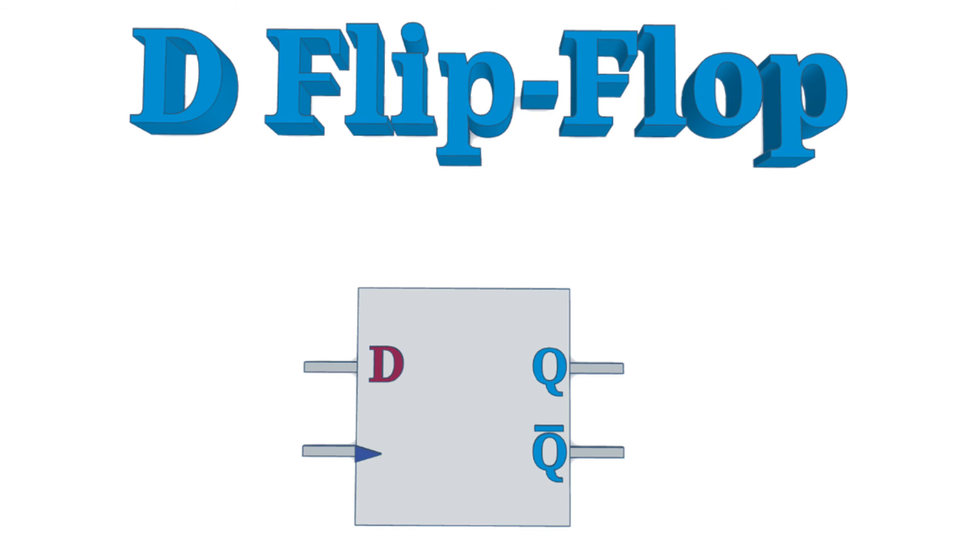Did you work it out? It's a NOT gate. The D flip-flop is basically an SR flip-flop with a D input, used as S, and the opposite of D, so D connected through a NOT gate, as the R input.